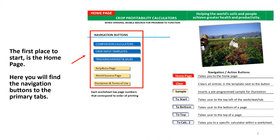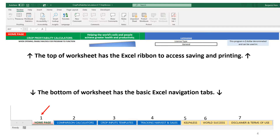The first place to start is the home page, where you will find the navigation buttons to the primary tabs. Once in the program, the top of the worksheet has the Excel ribbon to access saving and printing. The bottom of the worksheet has the basic Excel navigation tabs.